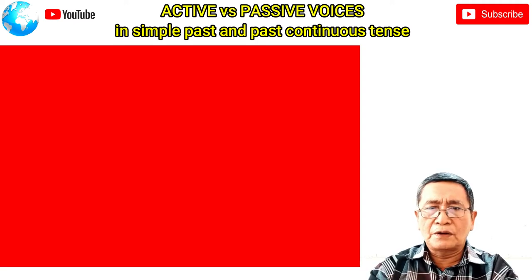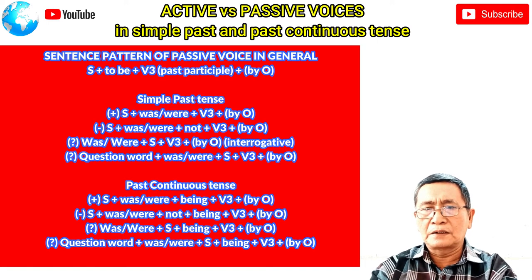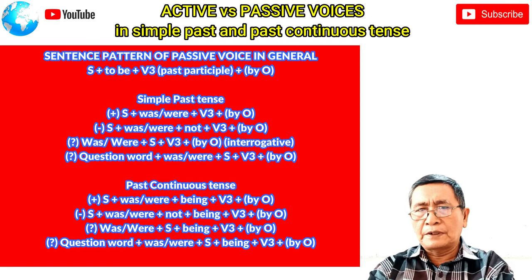Sentence pattern of passive voice in general: subject + to be + verb 3 or past participle + by + object. For passive voice in simple past tense: positive — subject + was/were + verb 3 or past participle + by + object; negative — subject + was/were + not + verb 3 or past participle + by + object; interrogative — was/were + subject + verb 3 or past participle + by + object.